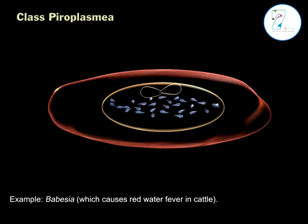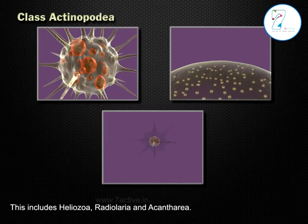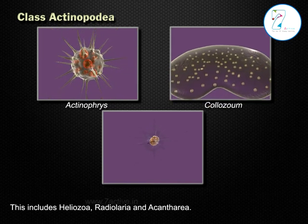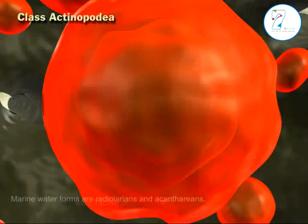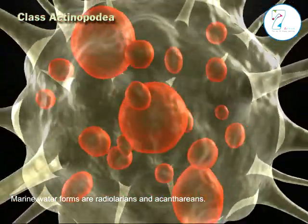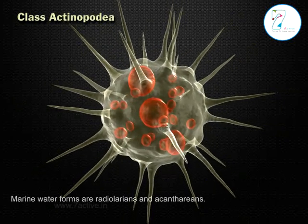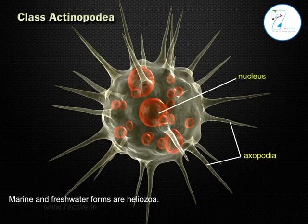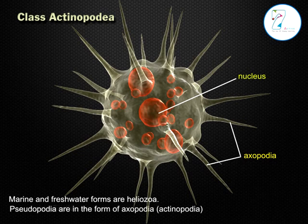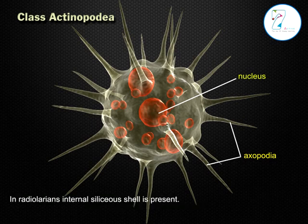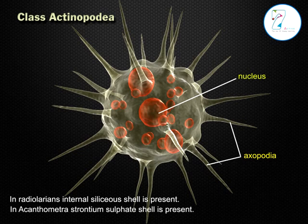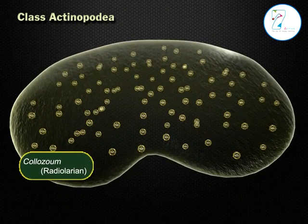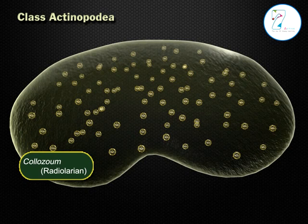Class 3 Actinopoda: this includes Heliozoa, Radiolaria, and Acantharia. Marine water forms are radiolarians and acantharians; marine and freshwater forms are heliozoans. Pseudopodia are in the form of axopodia. In radiolarians, an internal siliceous shell is present; in Acantharia, a strontium sulfate shell is present. Examples: Collozoum (Radiolaria), Actinophrys (Heliozoa), and Acantharia.